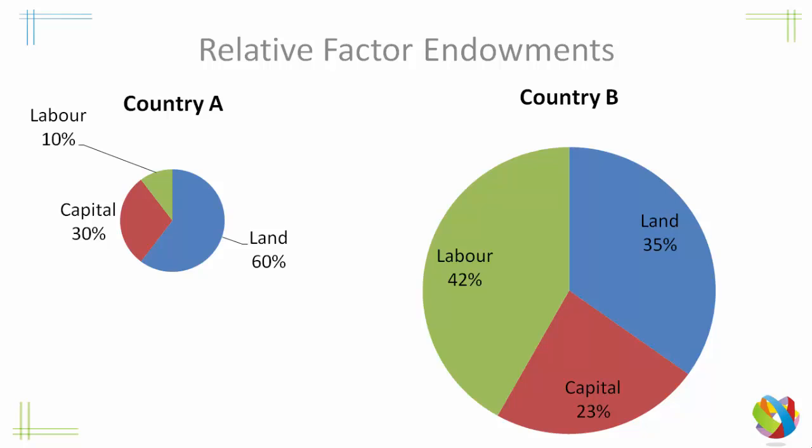Country B has about forty percent labour compared with twenty-three percent capital and thirty-five percent land. Notice that B is much bigger, and although land is only thirty-five percent of its factors of production, it still has much more land than Country A, even though in Country A land makes up sixty percent of the factors of production. So what did Heckscher and Ohlin say about this?